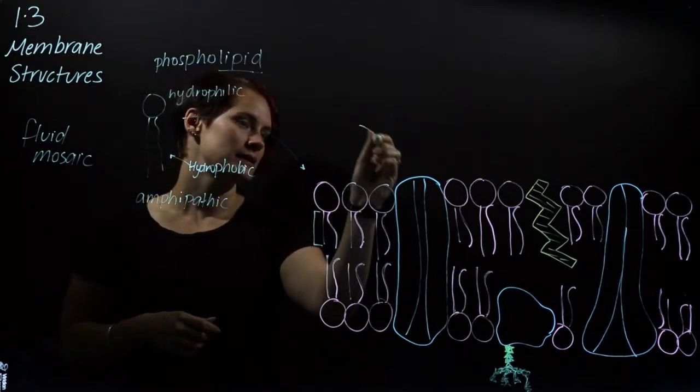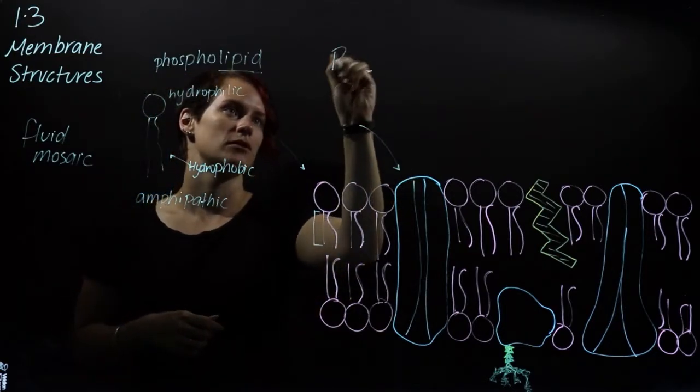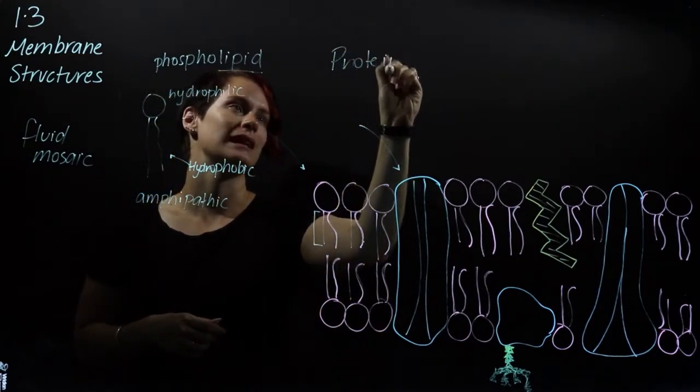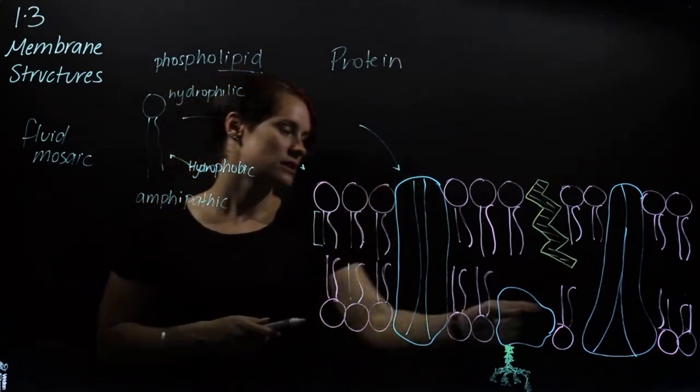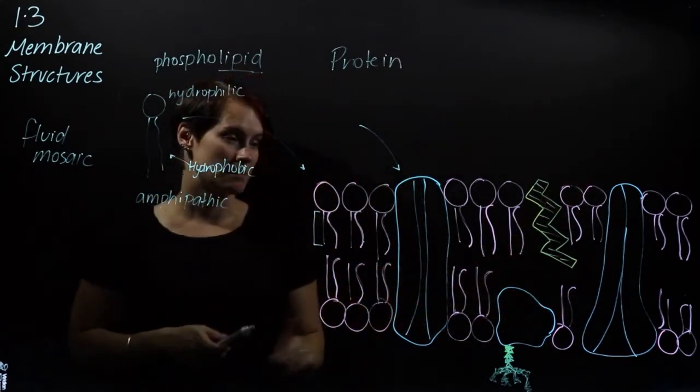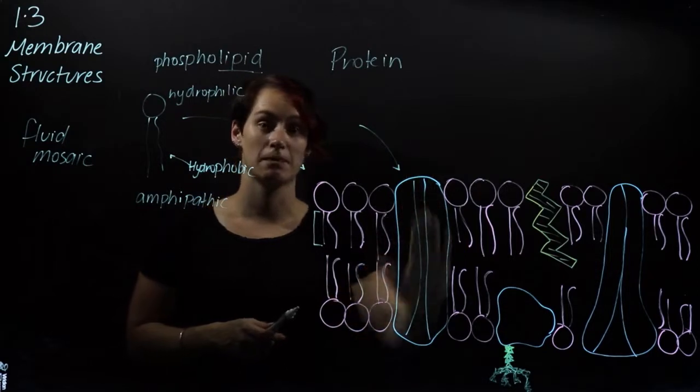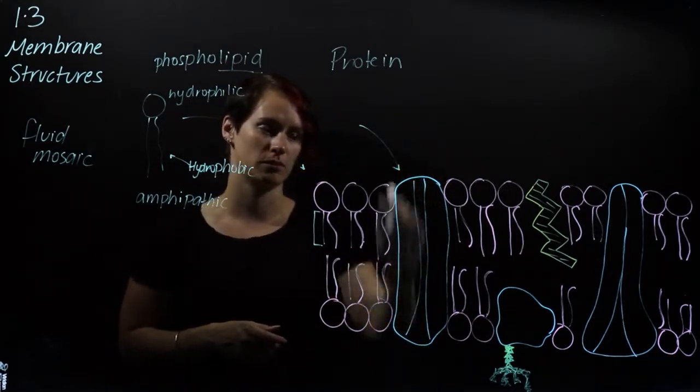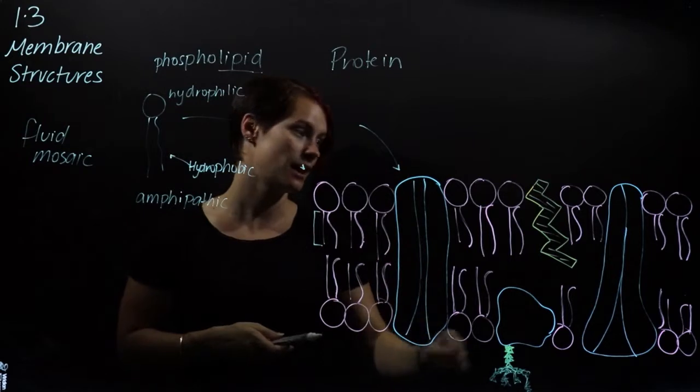All right, our next important piece of the puzzle is protein. Now proteins appear in lots of different places and lots of different ways in the membrane. We have these transmembrane proteins that run all the way through from top to bottom, so inside to outside.